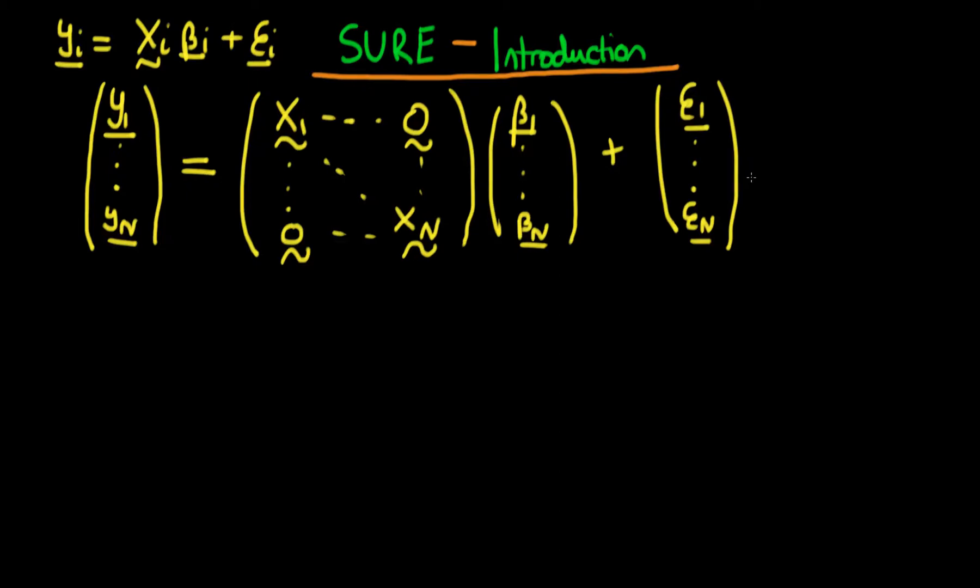In this video I want to continue our discussion of SURE estimation. In the last video we said that for each individual there might be some relationship between the dependent variable, which let's say in general has T observations, and a matrix which contains that particular individual's independent variables x_i and a specific parameter vector beta_i.